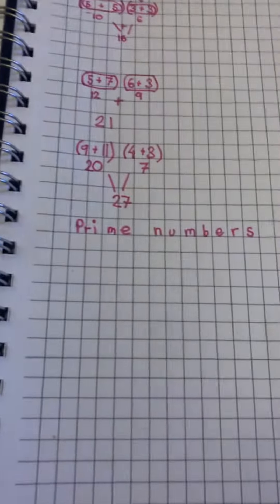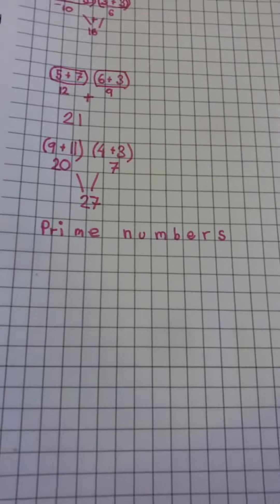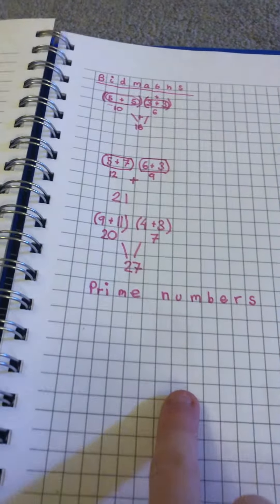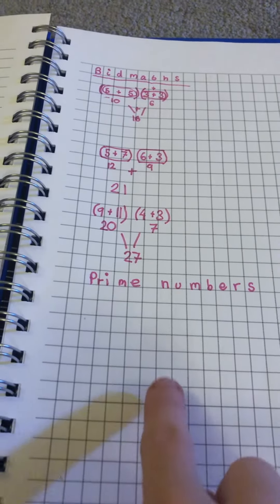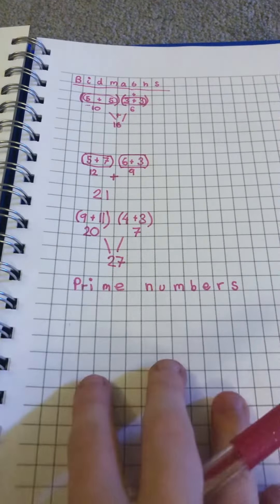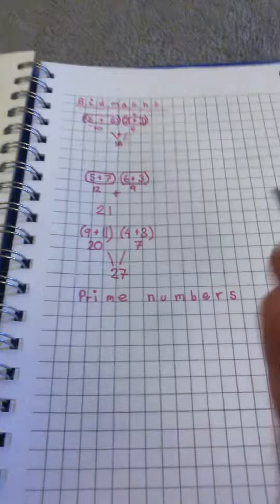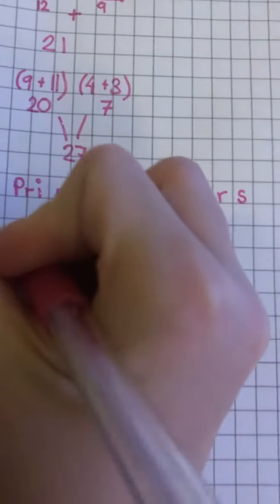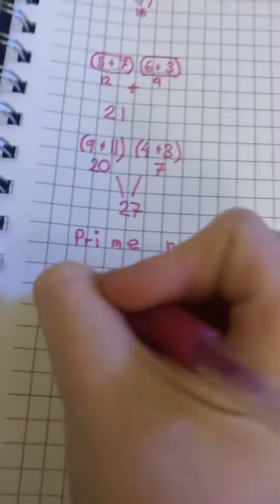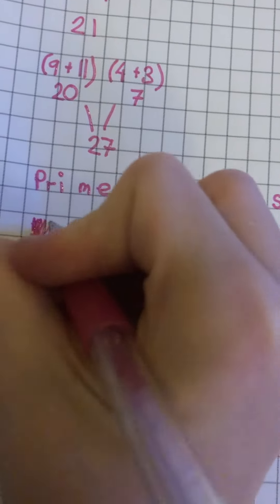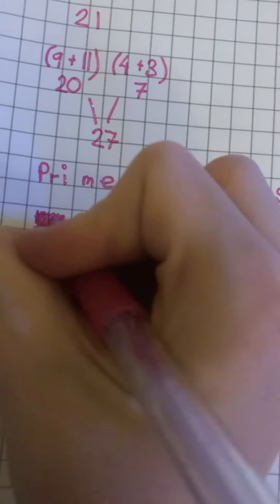Today I'm going to show you how to do prime numbers and how to explain it. So a prime number is a number that can be timed more than twice. For example, five — wait, no it's not, sorry. Let me think.